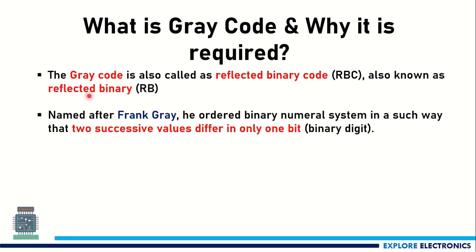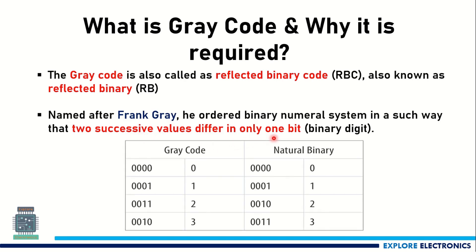Gray code is also known as reflected binary. It is named as gray code after Frank Gray. He ordered a binary number system in such a way that two successive values differ in only one bit position.